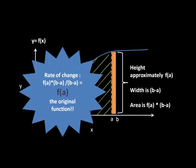The rate of change of area with respect to x is thus f of a times b minus a divided by b minus a, which is nothing but f of a, the original function's value. That's all there is to it.